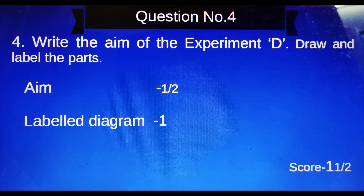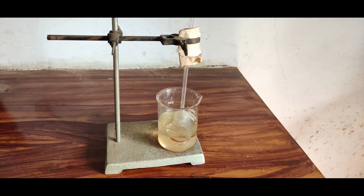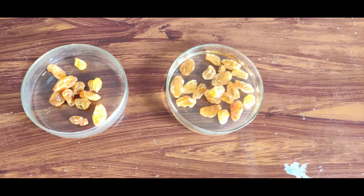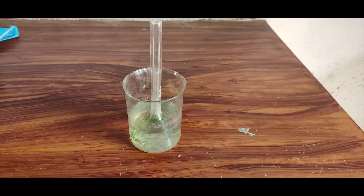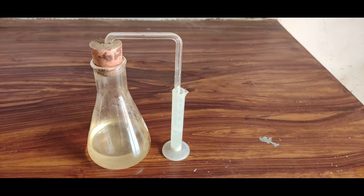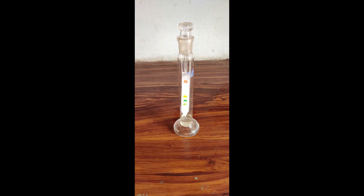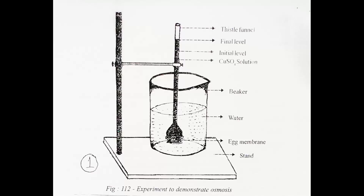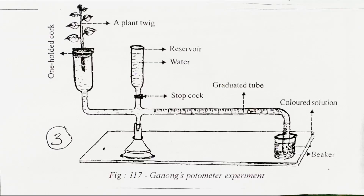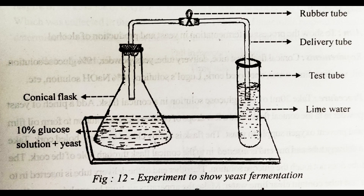Question number four: Write the aim of the experiment D and draw and label the parts. Aim: half score; labeled diagram: one score — total one and a half scores. The experiment could be: thistle funnel experiment, imbibition experiment by raisins, Ganong's photometer experiment, Hydrilla experiment, yeast fermentation experiment, or paper chromatography. Draw and label the diagram.